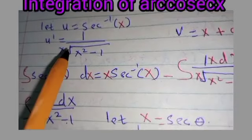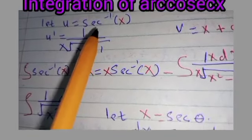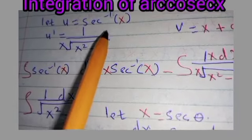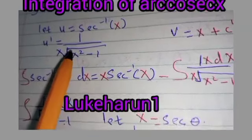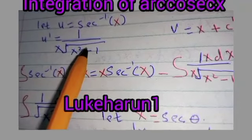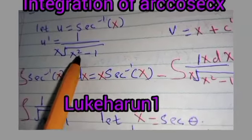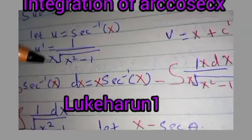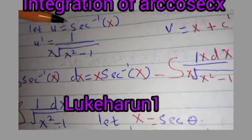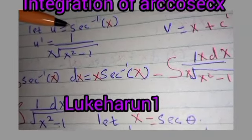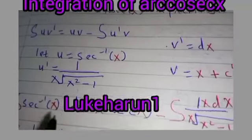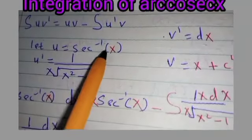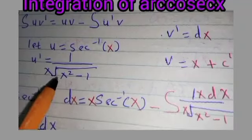For the process of differentiating inverse trigonometric functions, you can check my YouTube channel through the link below, or type my name 'look r1' to see how we differentiate inverse trigonometric functions. So our u will be arcsec(x) and our u' will be 1 over x·√(x²−1).